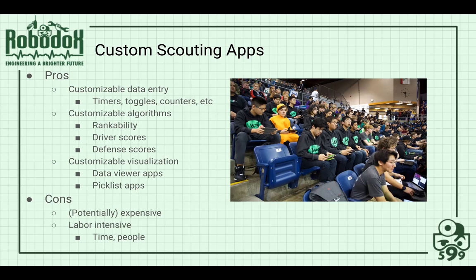You can also include customizable algorithms — things like rankability, driver scores, and defense scores, which are subjective ways of calculating how good a driver or defender is compared to others. You're also able to choose how you visualize the data, so instead of pulling up a spreadsheet on your phone at a competition, you could have a dedicated data-viewing app and picklist app that present exactly what you want, when you want it.